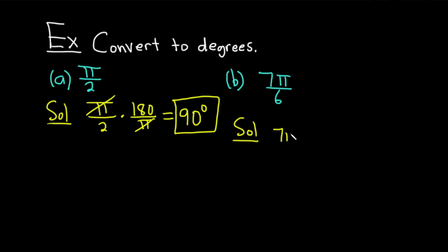As before, we write 7 pi all over 6, and that's times 180 over pi. And we have some simplification here. The 6 goes into 180 thirty times, and then the pi's cancel. So, you're left with 7 times 30, which is 210. But we have to put the little degree symbol. Super, super key. Super important to include the degree symbol.